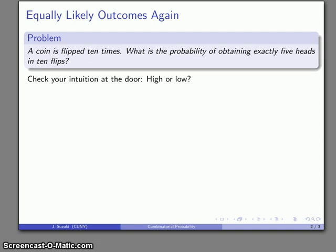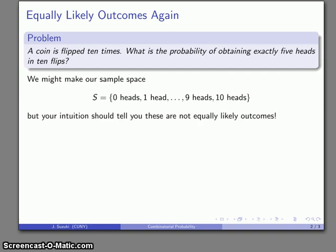So check your intuition at the door. Do you think that this probability is fairly high or is this something that's somewhat unlikely? We'll see whether your intuition matches with what our computation is. So we might make our sample space something like the number of heads: 0, 1, 2, 3, up to ten heads.